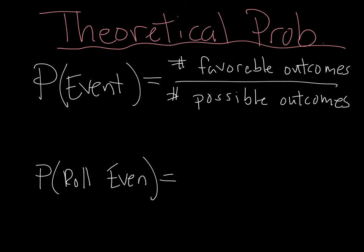So in our example from the previous screen, what's the probability of rolling an even? Well, how many favorable outcomes were there? There were 3. And how many possible outcomes were there? There were 6. So the probability is 1 half, or we could say it's 50%, or we could say it's 0.5.